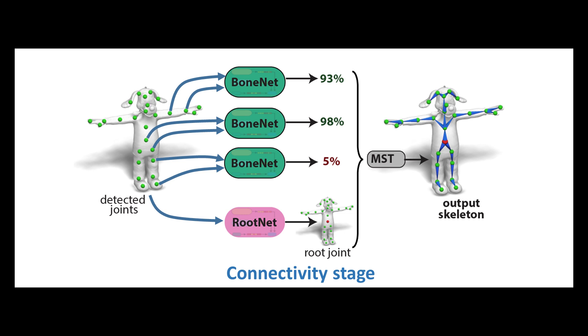Once RigNet forms joints from the given mesh, its second stage is to learn to connect these joints with bones.